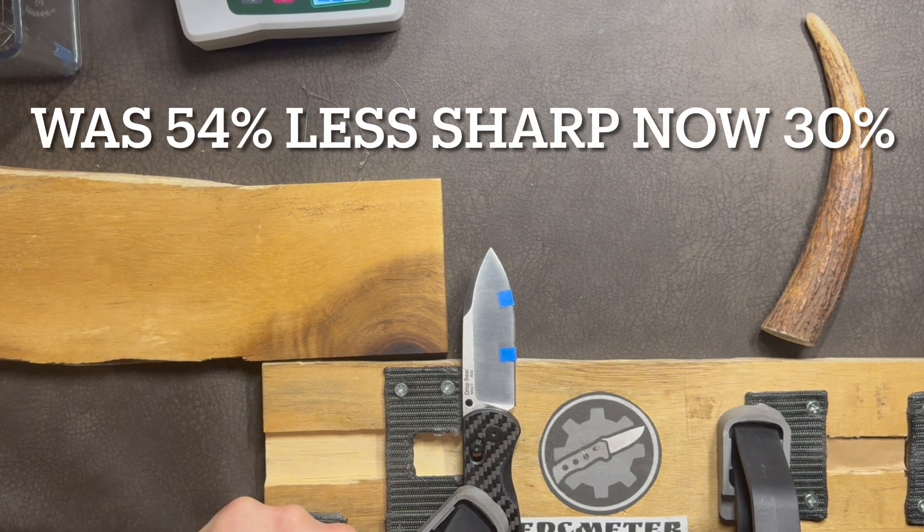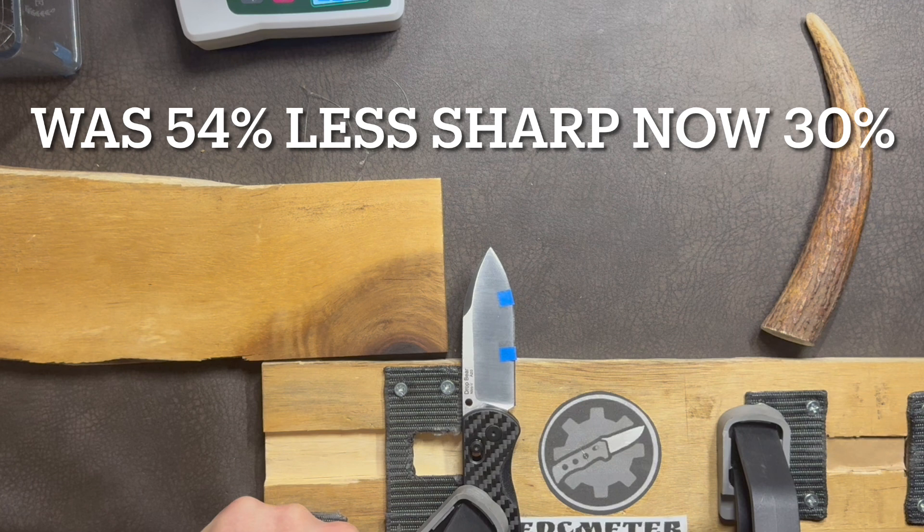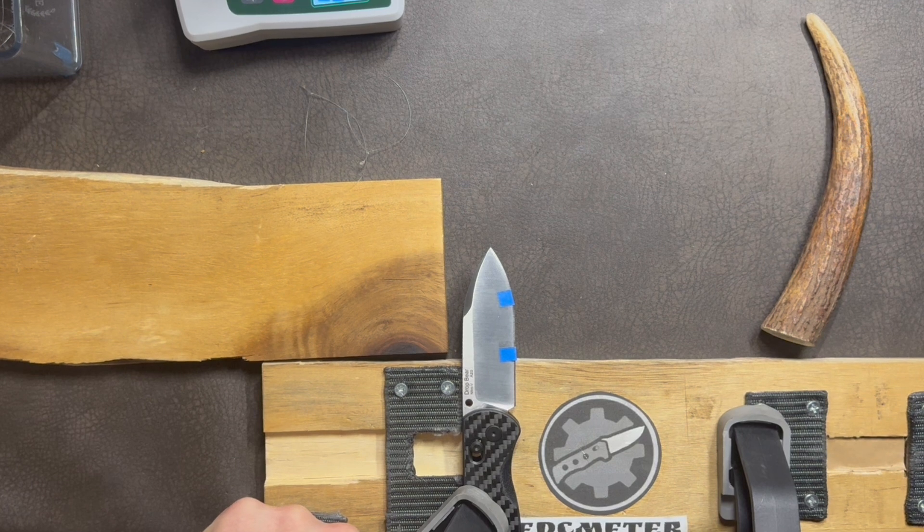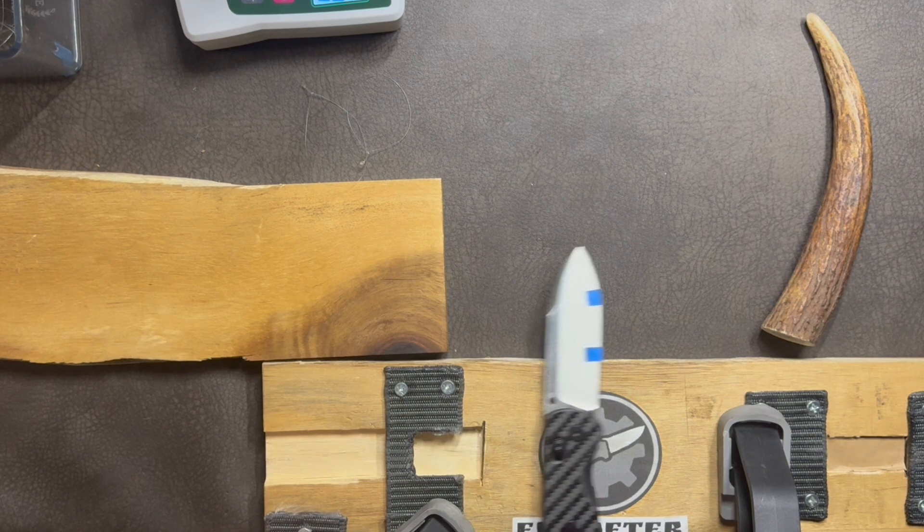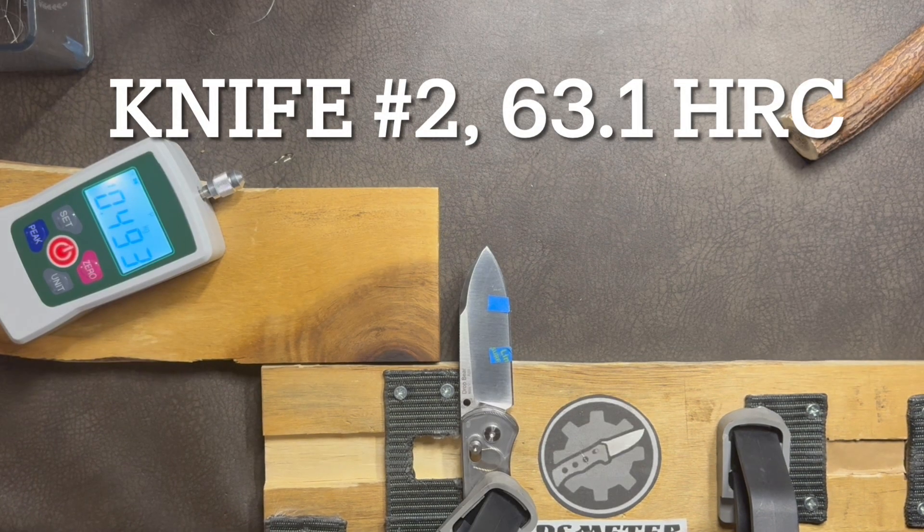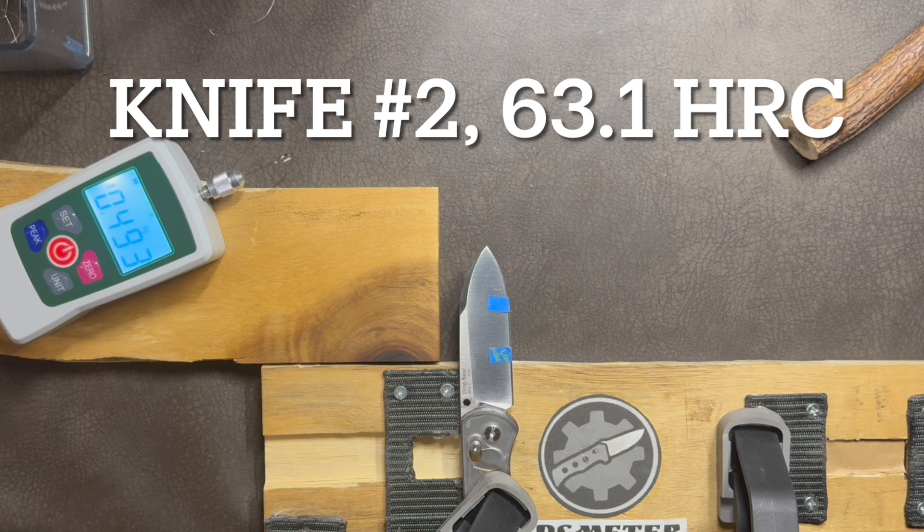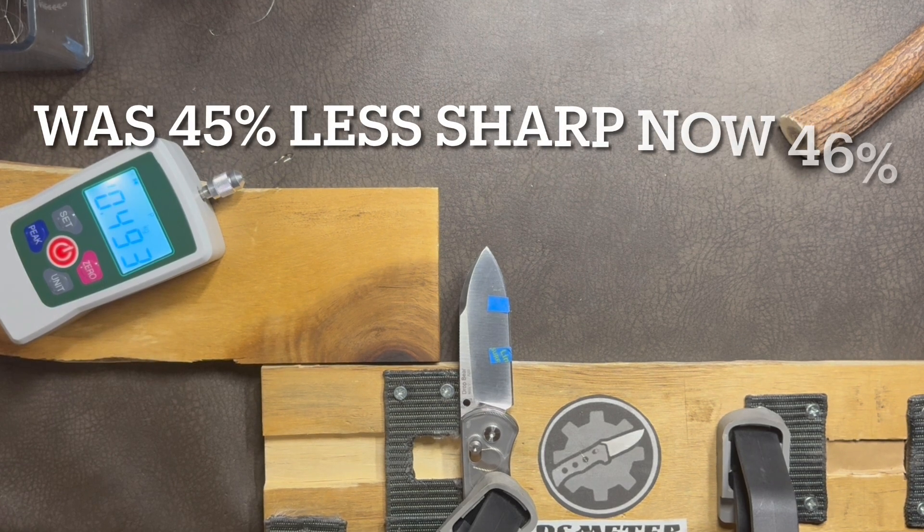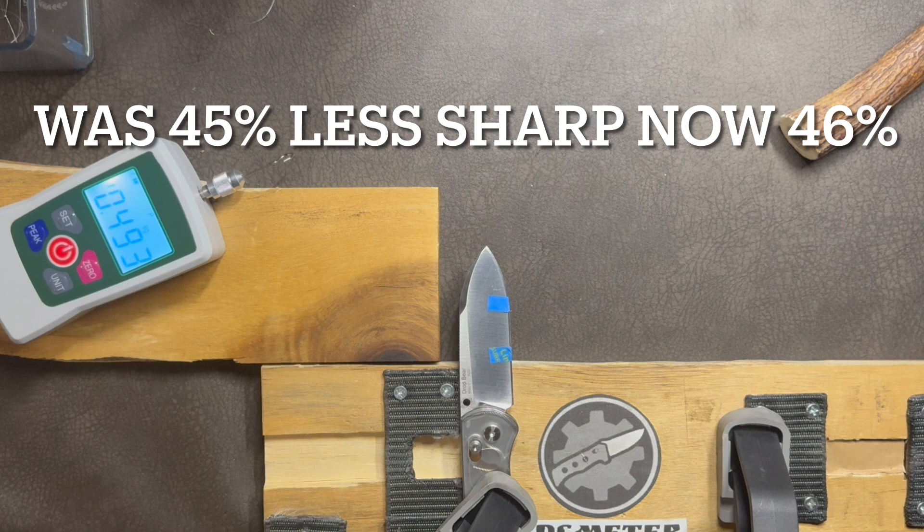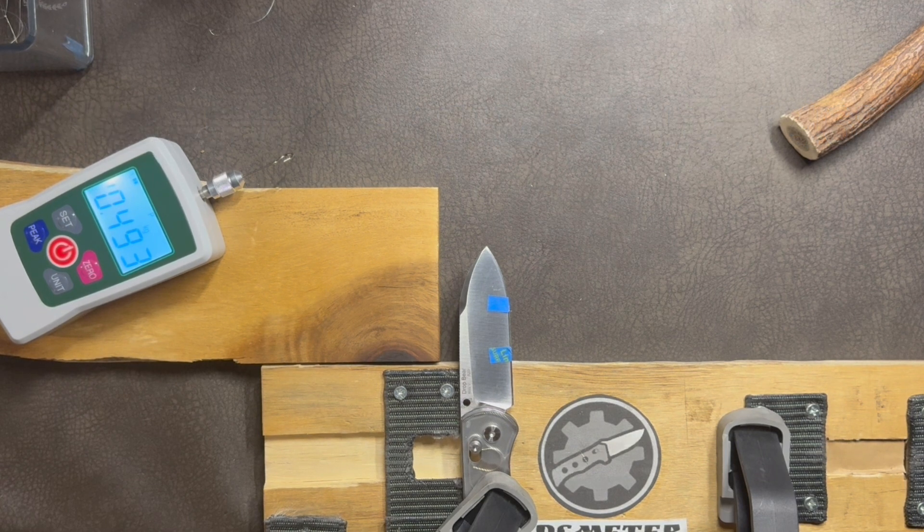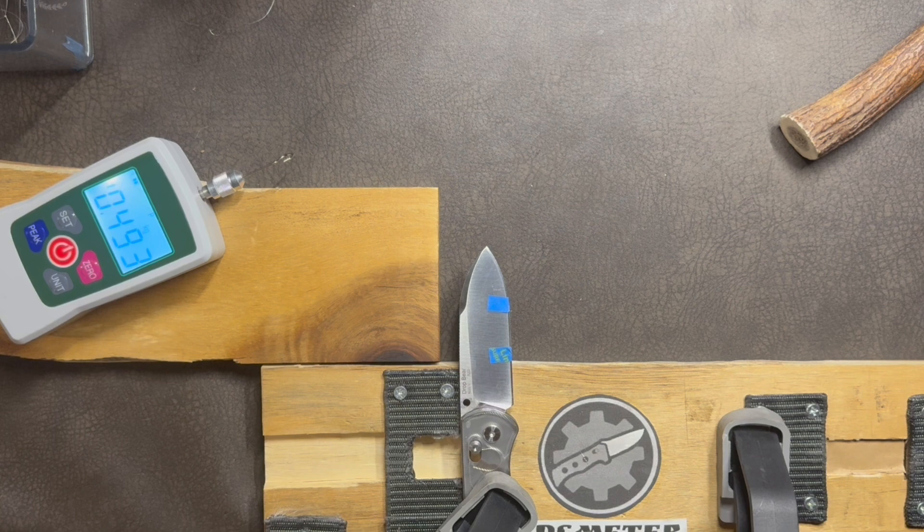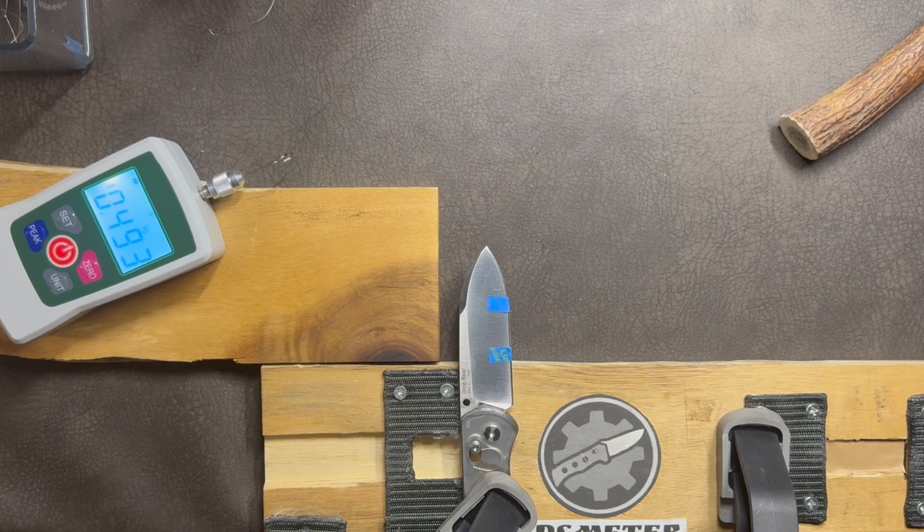So drop bear number one went from 54% sharpness reduction to 30% sharpness reduction after removing the factory edge, while keeping the same angle on the secondary bevel. But the second drop bear that was hardened to 63.1 HRC on average, went from 45% to 46%, basically the same loss of sharpness as before. And if you feel like we got more questions than answers at this point, don't jump to any conclusions yet, let's take a look at those edges under the microscope. Maybe we'll find some answers there.